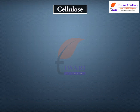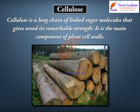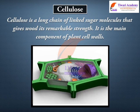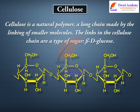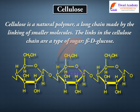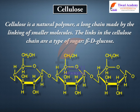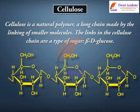Cellulose is a long chain of linked sugar molecules that gives wood its remarkable strength. It is a main component of plant cell walls. Cellulose is a natural polymer — a long chain made by the linking of smaller molecules. The links in the cellulose chain are a type of sugar: beta-D glucose.